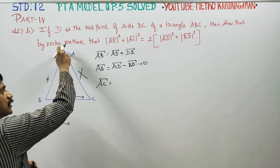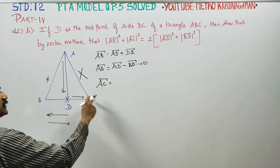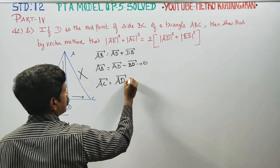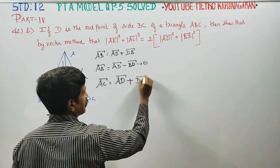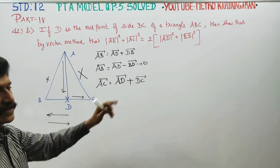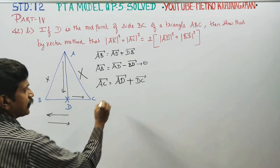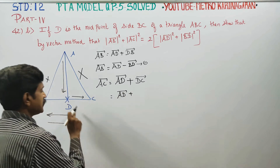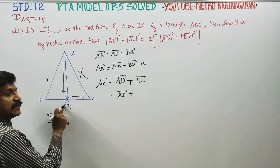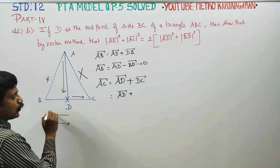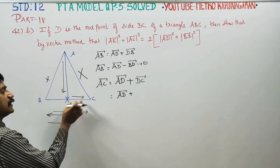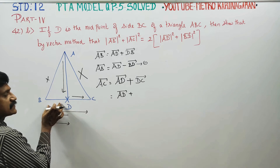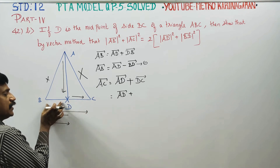Using the triangle law of addition, AC vector is equal to AD vector plus DC vector. This is AD vector plus DC vector. It is equal to AD vector plus DC vector, and DC vector equals BD vector.